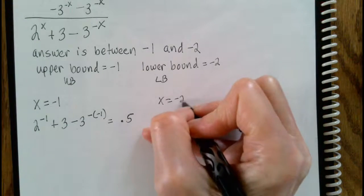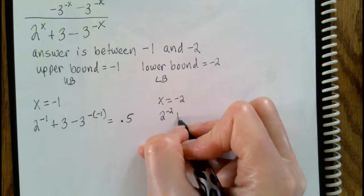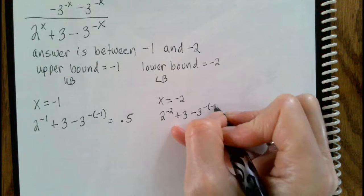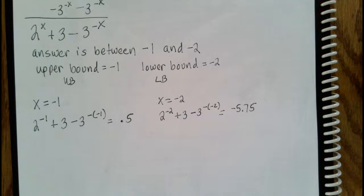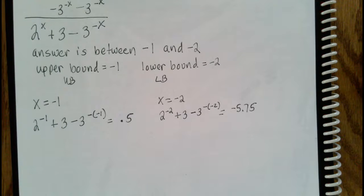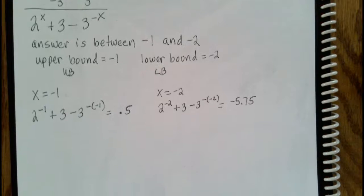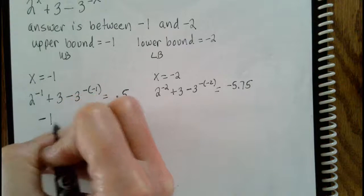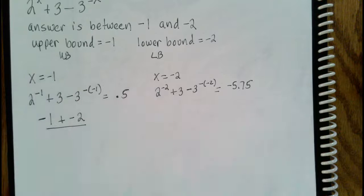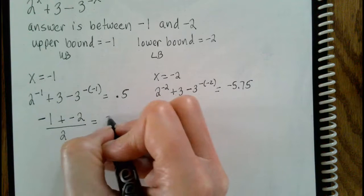We do the same thing with our lower bound of negative 2: 2 to the negative 2, plus 3, minus 3 to the negative negative 2. When we type that in, we get negative 5.75. Now, what's more important is that we take the average of the upper and lower bounds. Upper bound is negative 1, lower bound is negative 2. We add them and divide by 2, getting negative 3 halves.